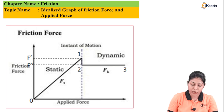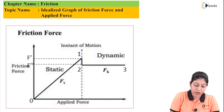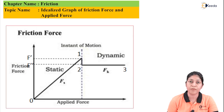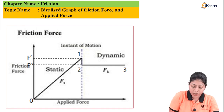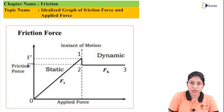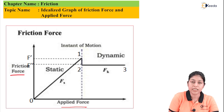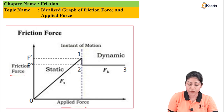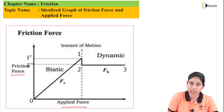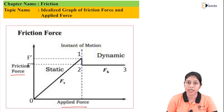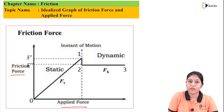As you can see in this particular diagram, this graph is representing the relationship between friction force and applied force. The horizontal axis is represented as the applied force on any particular body and the vertical axis is represented as friction force. If we are continuously increasing the value of applied force, we will see how the value of friction force is changing.